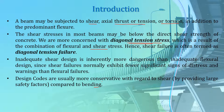If shear reinforcement is not provided, shear failure may occur. Shear failure is characterized by small deflections and lack of ductility, so there is little or no warning before failure. Flexural failure, by contrast, is characterized by a gradual increase in deflection and cracking, giving warning before total failure. Therefore, the design for shear must ensure that shear failure does not occur before flexural failure — the shear strength must always be at least equal to or greater than the flexural strength at all points in the beam.